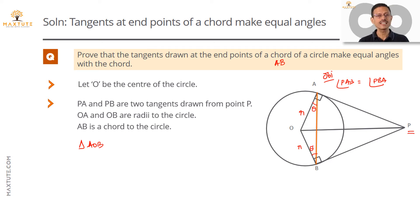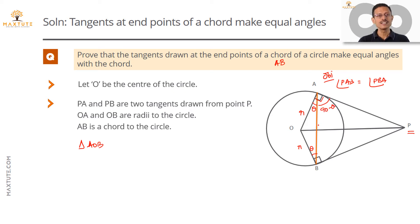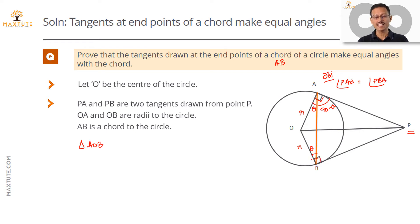We call those two equal angles theta. Now, angle OAP is the entire angle at A, equal to 90 degrees. A part of it, angle OAB, equals theta. So the remaining part — angle PAB — is equal to 90 minus theta. Similarly for the bottom tangent: angle OBP equals 90 degrees and angle OBA equals theta.